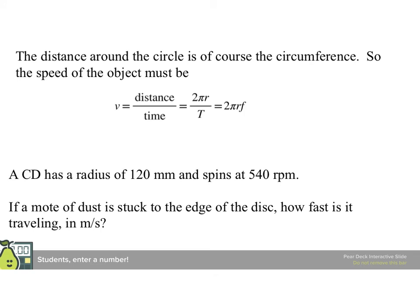The distance around the circle is, of course, the circumference. So the speed of an object must be distance over time. The distance is 2 pi r. The time is one period T. So it must be that v is 2 pi r over T. And since 1 over T is the frequency, it must also be that v is 2 pi rf, which is useful.